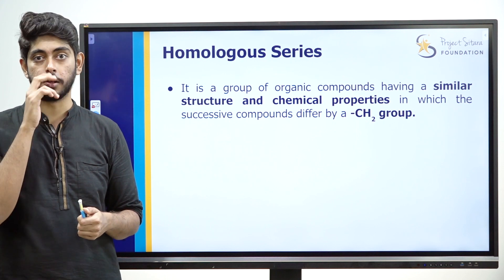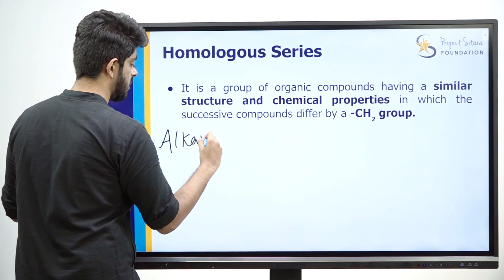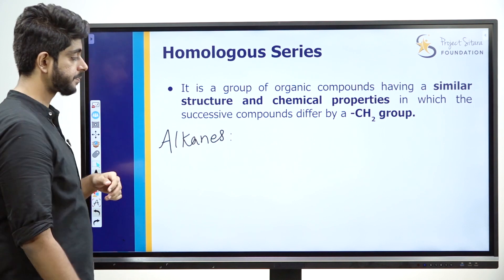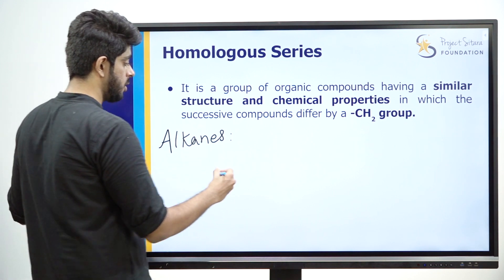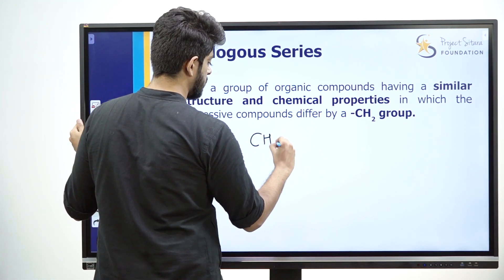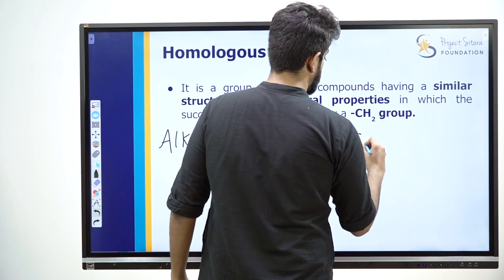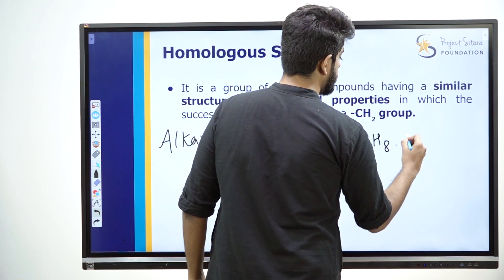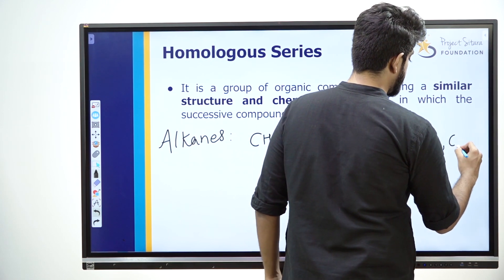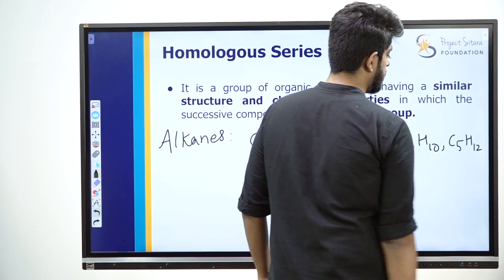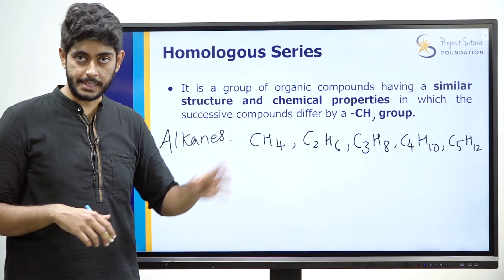Let's start with alkanes. Alkanes are single bond saturated hydrocarbons. The alkanes we know are: methane CH4, ethane C2H6, propane C3H8, butane C4H10, pentane C5H12, and then hexane, heptane, octane — this forms one series.